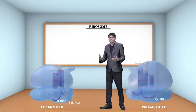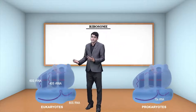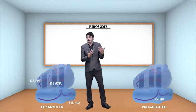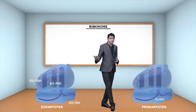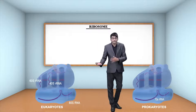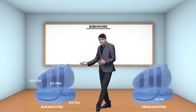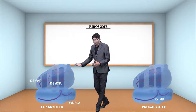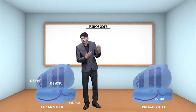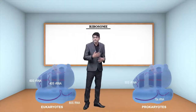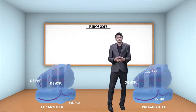The 80S ribosome has 2 subunits: 60S and 40S. The 60S is the large subunit and 40S is the small subunit. Comparing with prokaryotes, the 70S type of ribosomes have one large subunit known as 50S and one small subunit known as 30S.